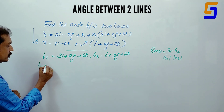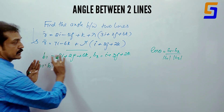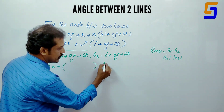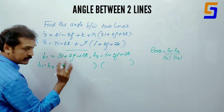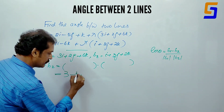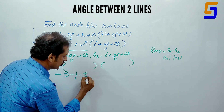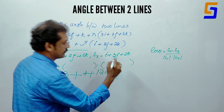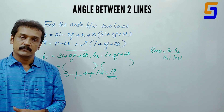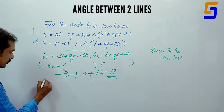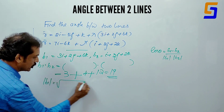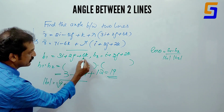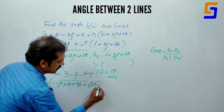Then b1 dot b2 is computed. Modulus b1 equals root of (3 squared plus 2 squared plus 6 squared) equals root of (9 plus 4 plus 36) equals root of 49, which is 7.